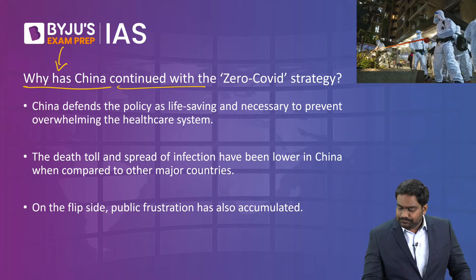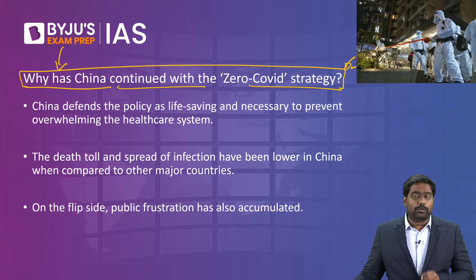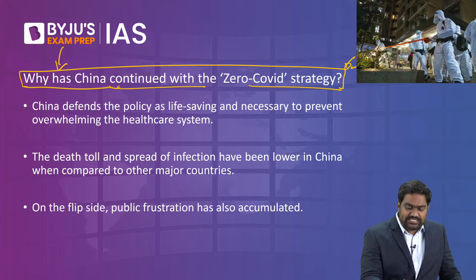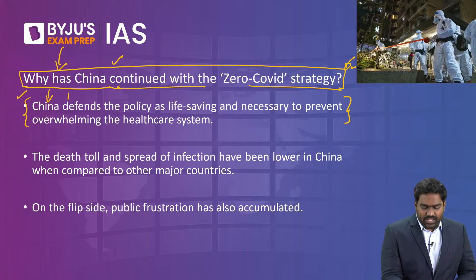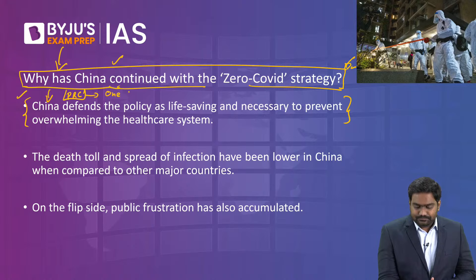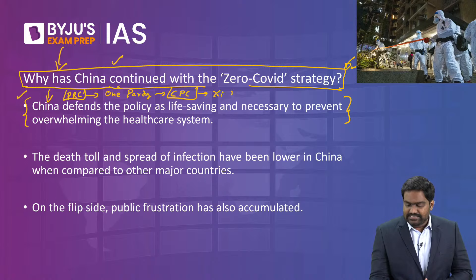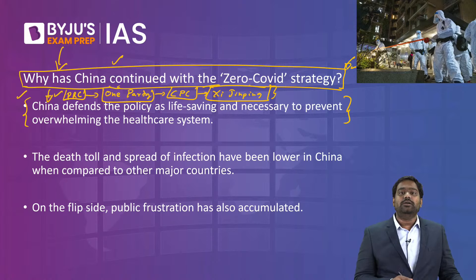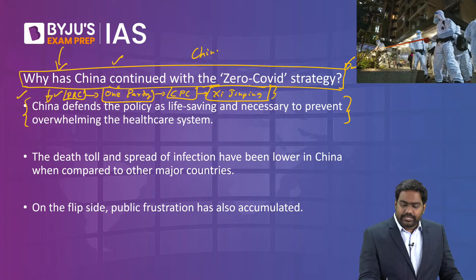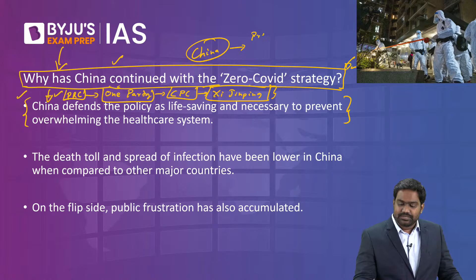We should understand why China has continued with this strict zero COVID policy. The Chinese state — the PRC, the People's Republic of China — is a one-party state. You have just one party, the Communist Party of China, headed by Xi Jinping as General Secretary, who is also the president. The party itself forms the state. There are no elections, no democracy, and no basic fundamental rights. Basic rights such as freedom of press, freedom of expression, freedom of speech, freedom of association, and the freedom to protest are all curbed in this authoritarian communist state.